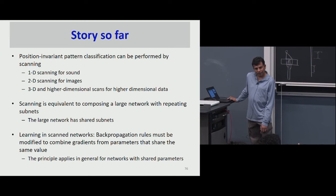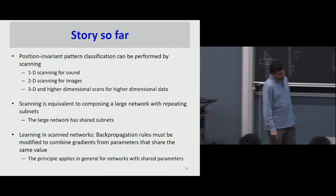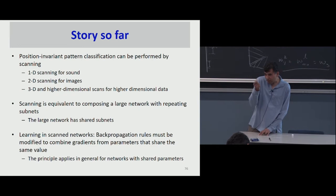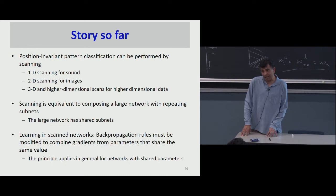A student asks: in the flower example, there are many patches where the flower wasn't present — when updating weights, what happens for those? The answer: when you compute the derivative, it also considers the input. For those locations, you'd expect the derivative to be small, because the input doesn't have the pattern. This is standard backpropagation — nothing changes. Any input will have components relevant and irrelevant to the class; the derivatives of parameters with respect to the irrelevant components are expected to be small.